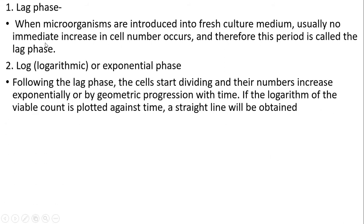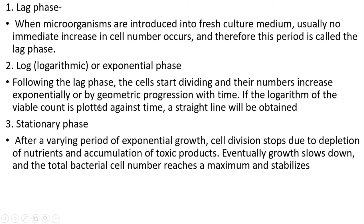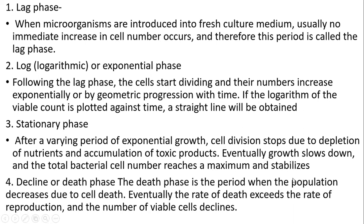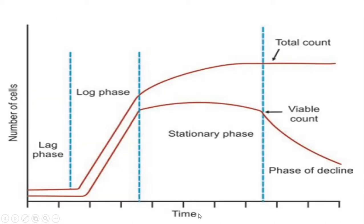In the log phase, following the lag phase, cells start dividing and their numbers increase exponentially — by geometric progression — with time. If the logarithm of the viable count is plotted against time, a straight line is obtained. In the stationary phase, after a varying period of exponential growth, cell division stops due to depletion of nutrients and accumulation of toxic products; the total bacterial cell number reaches a maximum and stabilizes. In the decline or death phase, the population decreases due to cell death; the rate of death exceeds the rate of reproduction and the number of viable cells declines. This is illustrated by the bacterial growth curve plotted against number of cells and time.